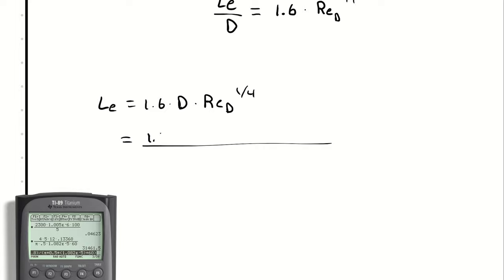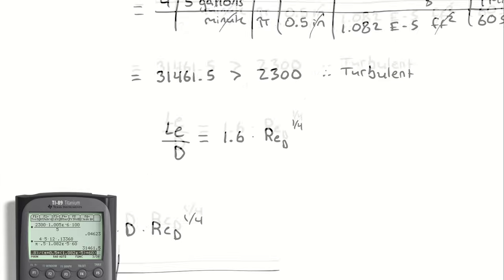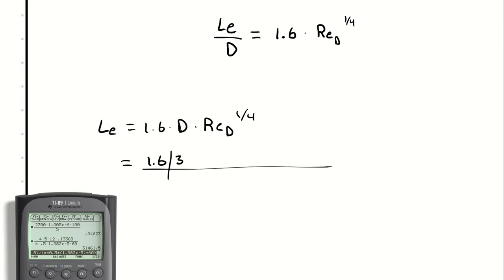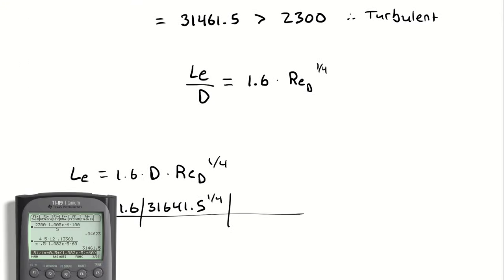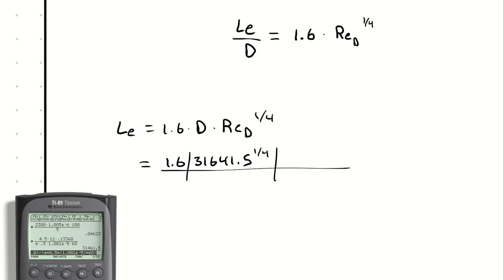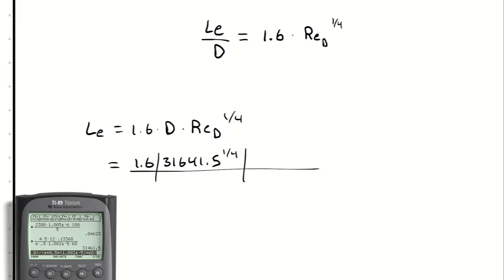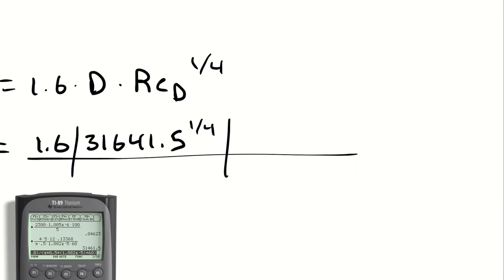That means I have 1.6 times 31461.5 to the 1 quarter power multiplied by our diameter. And the convenient thing about this is because 1.6 and the Reynolds number are dimensionless, whatever unit I plug in for diameter is going to be the unit that I get out at the end. So if I plug in 1.5 inch, I will get out an entrance length in inches.